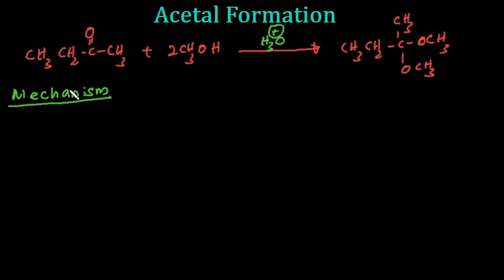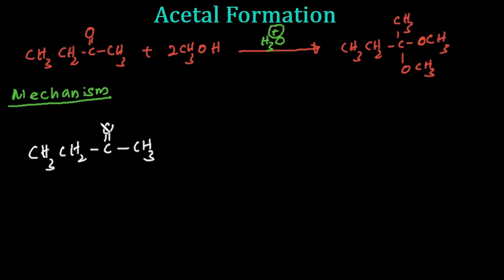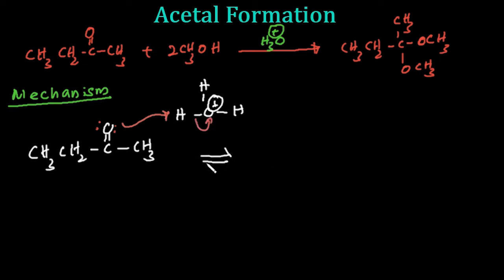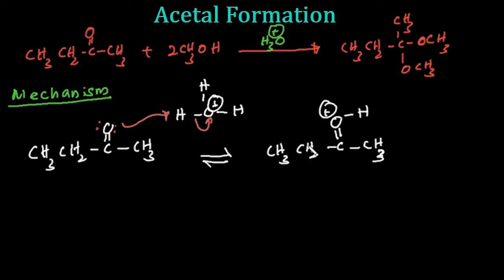Let's focus on the mechanism of this reaction. First, this ketone reacts with this acid catalyst. We have a lone pair on the oxygen, and this hydronium ion is our acid. This lone pair grabs this hydrogen and makes this intermediate — this is a reversible reaction. The oxygen now has a positive charge.